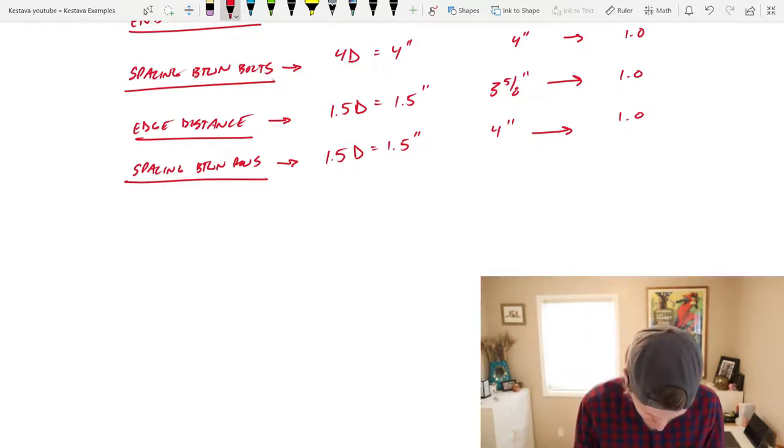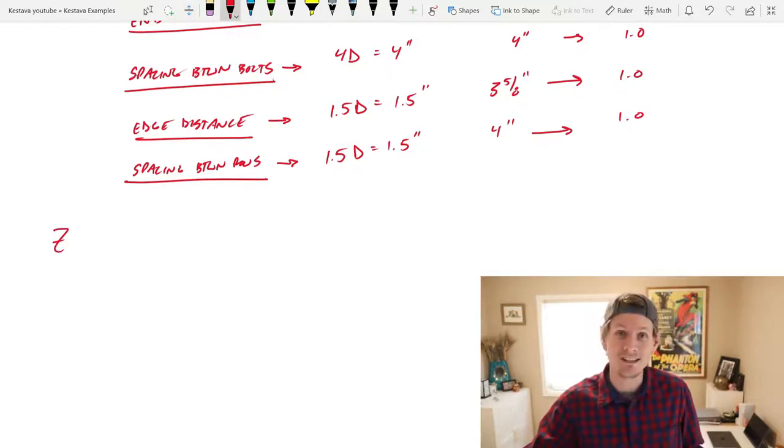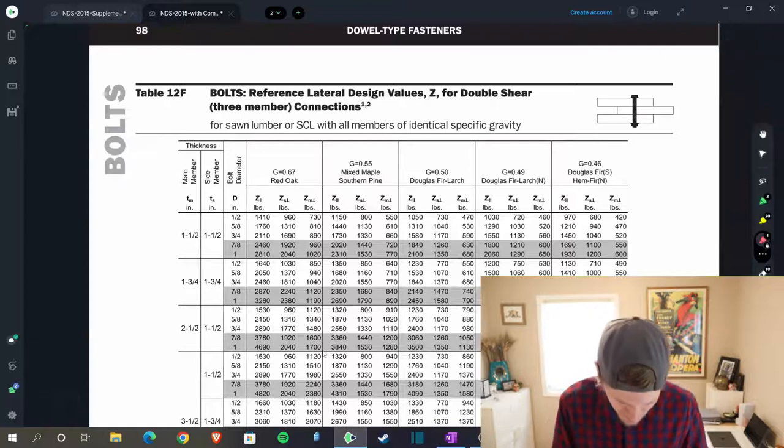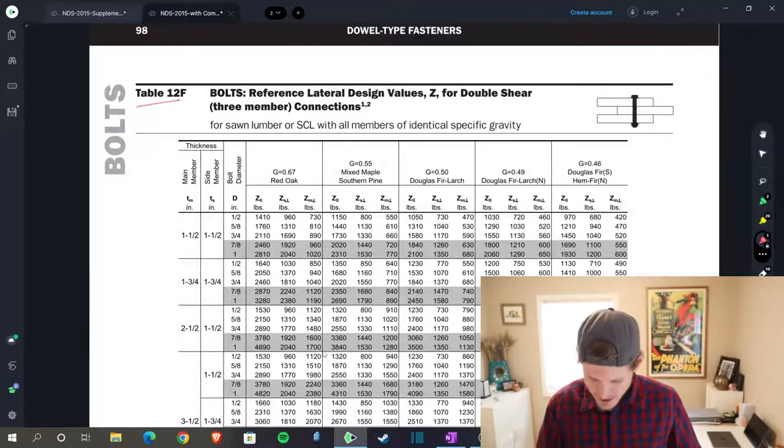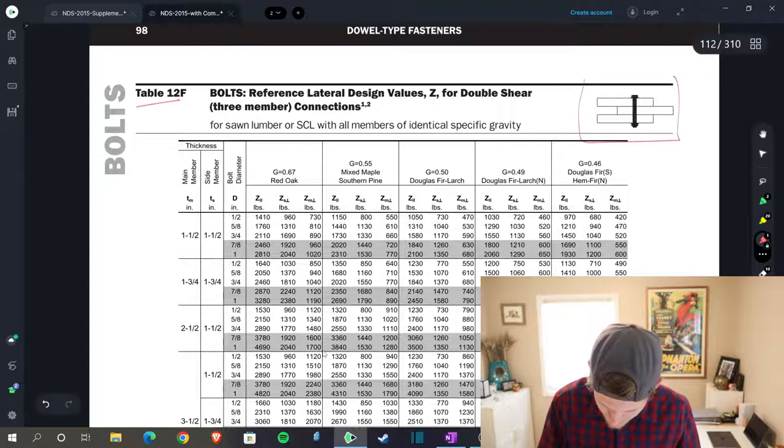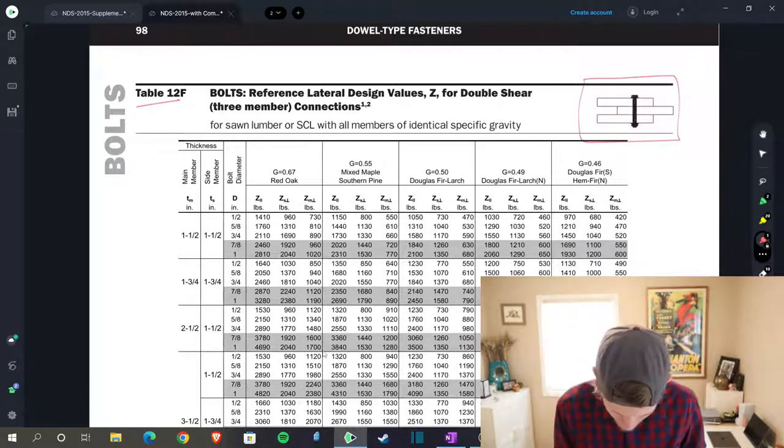Next up on our list, we need our z value, so let's head into the NDS and determine what that is. We find ourselves in Table 12F. Now we have a double shear condition here, and they provide these nice figures in the top right corner for you. You want to make sure that you check this.